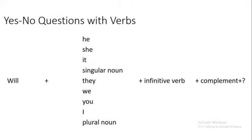We have finished affirmative and negative sentences. Now we will move to questions with verbs — حالة السؤال مع الأفعال — specifically yes/no questions. The question starts with will, plus he, she, it, or singular noun, or they, we, you, I, or plural noun, plus infinitive verb, plus complement.